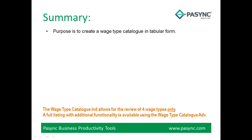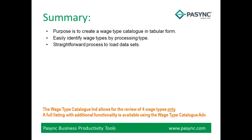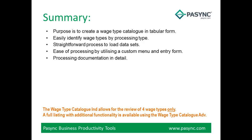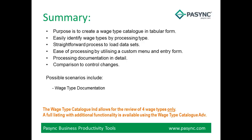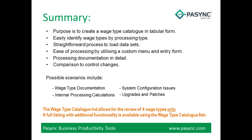In summary, the purpose is to create a wage type catalogue in tabular form, easily identify wage types by processing type, with a straightforward process to load datasets and ease of processing using a custom menu and entry form. Processing documentation in detail and comparison to control changes. Possible scenarios include wage type documentation, internal processing calculations, system configuration issues, and upgrades and patches. Please note, the wage type catalogue individual allows for the review of four wage types only. For a full listing with additional functionality, this is available using the wage type catalogue.